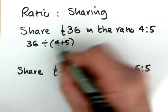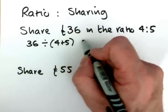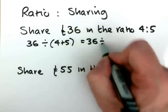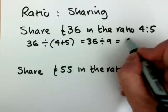One share is going to be equal to 36 divided by 9, and that equals 4.